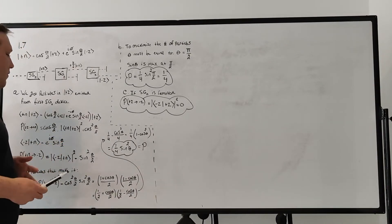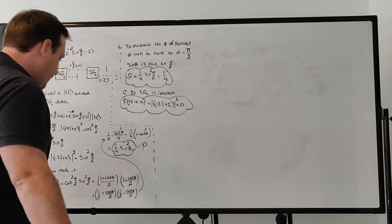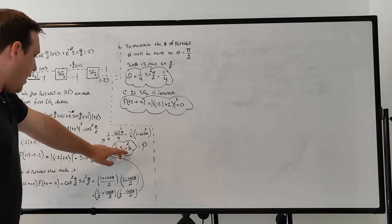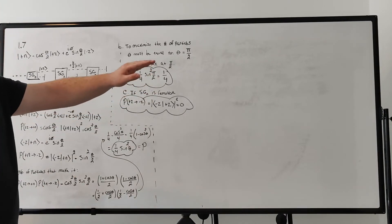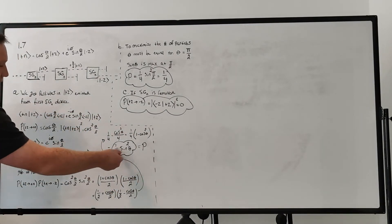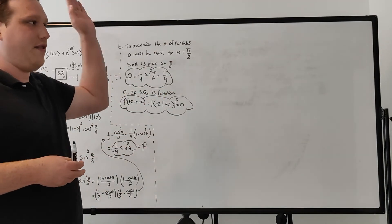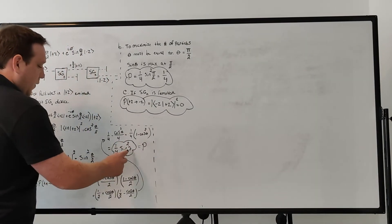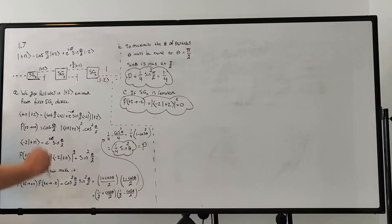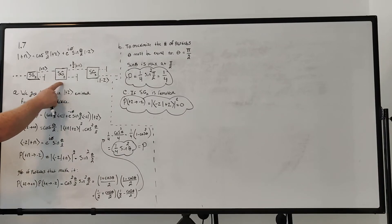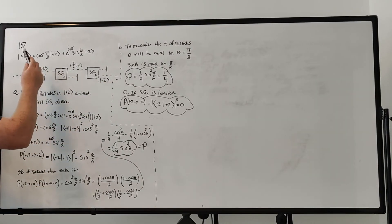To maximize the number of particles, we need to maximize (1/4)sin²θ. If theta equals zero, sine of zero is zero, so zero percent make it. The maximum value of sin²θ is 1, which occurs at theta = π/2. Plugging in π/2 gives a maximum fraction of one-fourth. So if we choose theta = π/2 for the SGN device, at most one-quarter of the original particles make it through to the end.